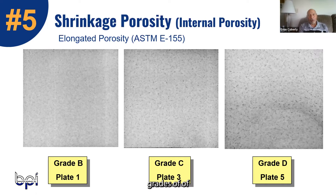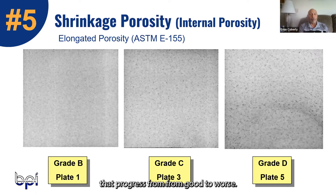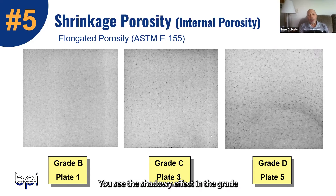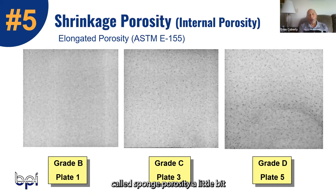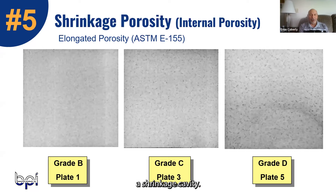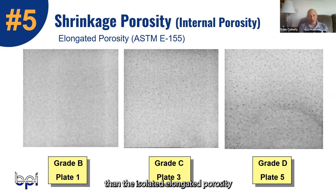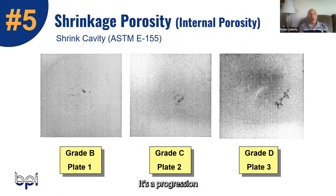These are different x-ray grades of elongated porosity, progressing from good to worse. In the Grade D slide you see a shadowy effect, which is where it has actually gone to something called sponge porosity — a step below a shrinkage cavity and a little bit worse than isolated elongated porosity.